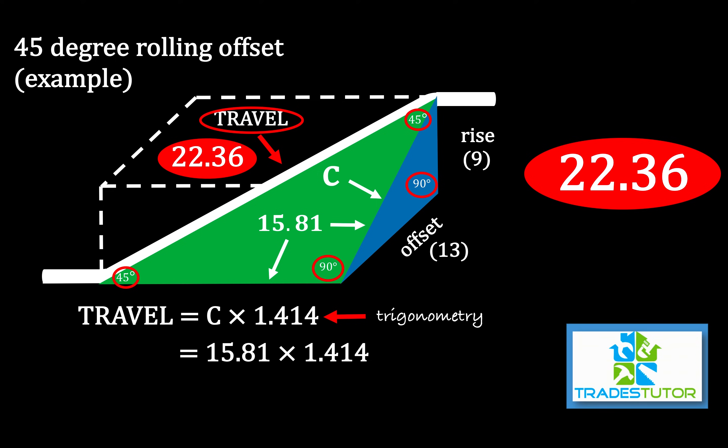So in the end of the day, it's not really that hard. It's two triangles. Once you sort those out, basically it's two steps to get you the travel in that 45 degree rolling offset. Thanks for watching, thanks for listening. Hope this helped you guys and good luck with your studies and have a great day.